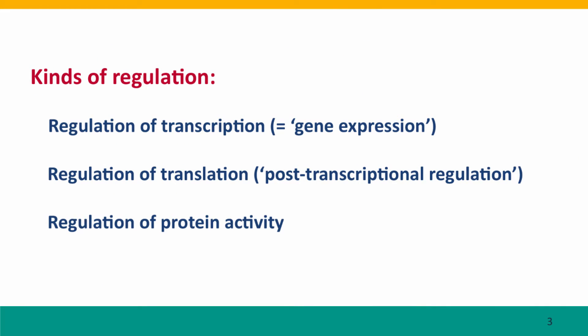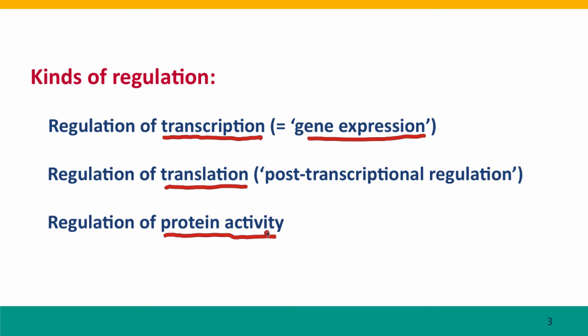There are actually three kinds of regulation that can control what the products of genes are doing. The first is regulation of whether or not the gene is transcribed, often called regulation of gene expression. The second is regulation of what happens to the messenger RNA produced by transcription — is the messenger RNA translated? This is often called post-transcriptional regulation. Finally, there's the regulation of protein activity: what does the protein do once the messenger RNA has been translated, and when and where does it act?